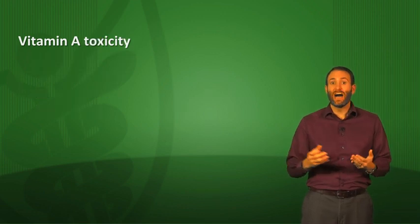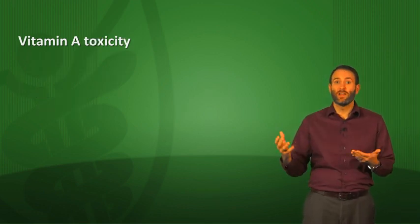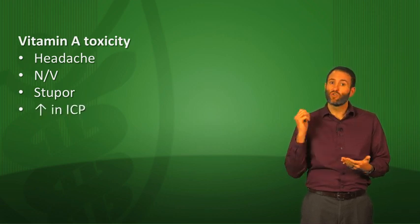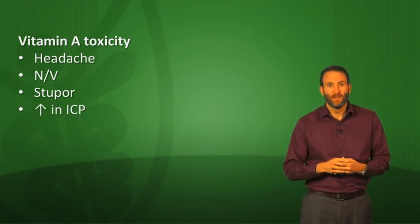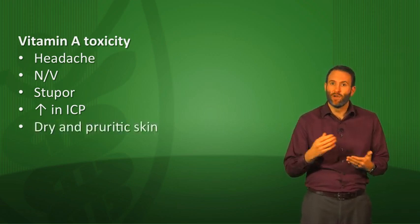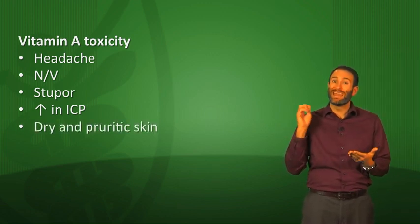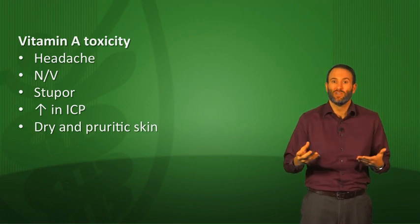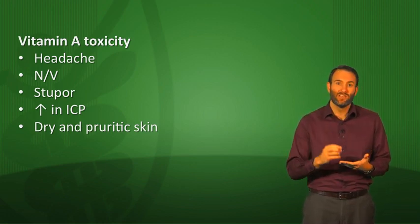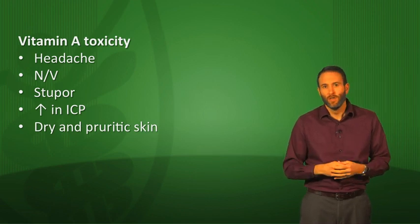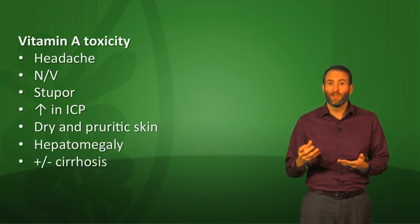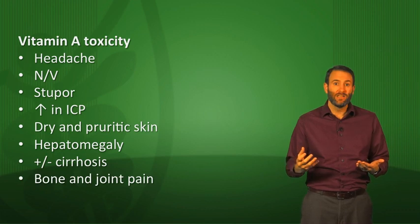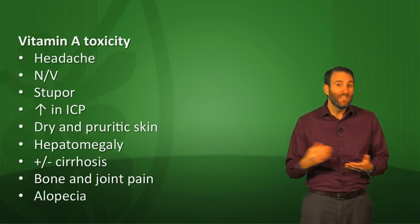Signs of hypervitaminosis A — too much vitamin A toxicity — include headache, nausea, vomiting, stupor, and increased intracranial pressure, which is pseudotumor cerebri. The skin can have problems: very dry and pruritic skin. Too much beta-carotene (not vitamin A itself) causes a benign orange coloration of the skin — it actually does not lead to vitamin A toxicity, so it's relatively safe. The liver can become enlarged and possibly cirrhotic with vitamin A toxicity. You can also get bone and joint pain, and alopecia — so anyone on isotretinoin should be monitored for these symptoms.